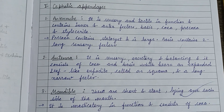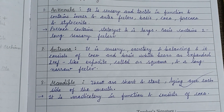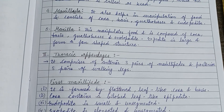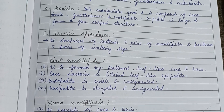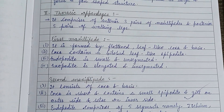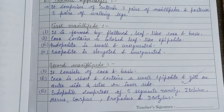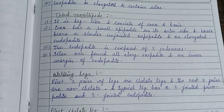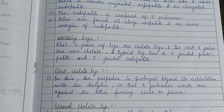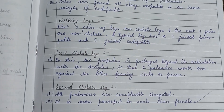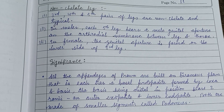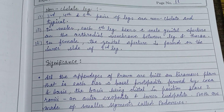Cephalic appendages include the antennule, antenna, mandible, maxillula, and maxilla. Thoracic appendages include the 1st maxillipede, 2nd maxillipede, 3rd maxillipede, and the walking legs — the 1st chelate leg, 2nd chelate legs, and the non-chelate legs.